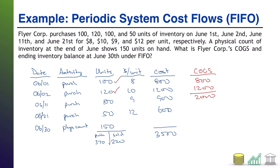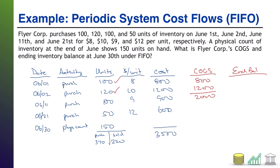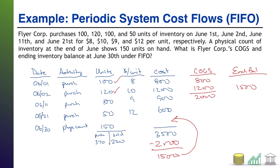What is our ending inventory worth? There are two ways to go about it. We could say we got rid of the first two batches entirely, so we still have the last two batches: $900 plus $600 = $1,500. Alternatively, we know we had $3,500 total cost of goods available for sale, minus the $2,000 that we sold, which leaves $1,500. Either way, our ending inventory balance under FIFO is $1,500.